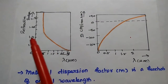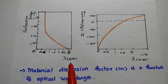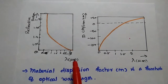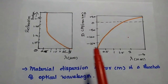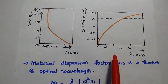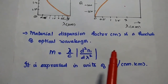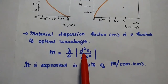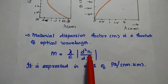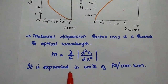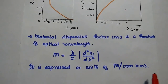Next, we relate the refractive index of the core material and material dispersion with respect to optical wavelength. As wavelength increases, the refractive index gradually reduces. This is shown as dispersion versus wavelength of the fiber cable. The material dispersion factor M is a function of optical wavelength, given as M equals (λ/c)·d²n1/dλ², expressed in units of picoseconds per nanometer per kilometer.